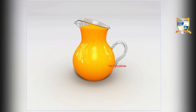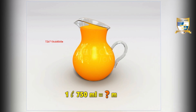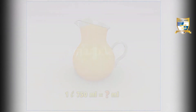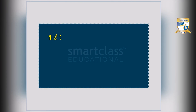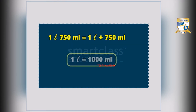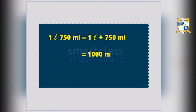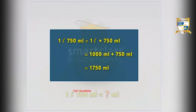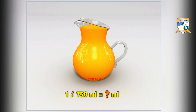Let us try another one. The volume of the orange juice in the jug is 1 litre 750 millilitres. What is the volume of orange juice in the jug in millilitres? First, split 1 litre 750 millilitres into 1 litre plus 750 millilitres. 1 litre equals 1000 millilitres. Add 1000 millilitres and 750 millilitres, and you get 1750 millilitres. So the volume of the orange juice in the jug in millilitres is 1750 millilitres.